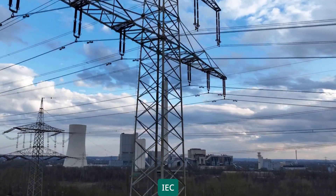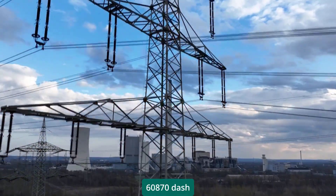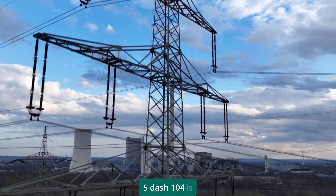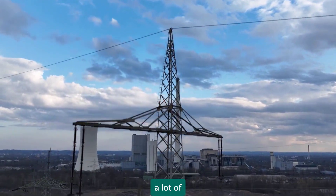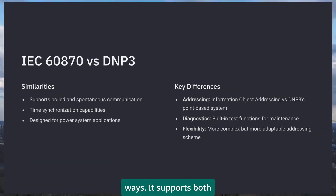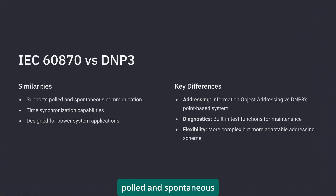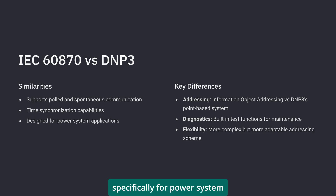IEC 60870-5-104 is similar to DNP3 in a lot of ways. It supports both polled and spontaneous communication, it handles time synchronization, and it's designed specifically for power system applications.